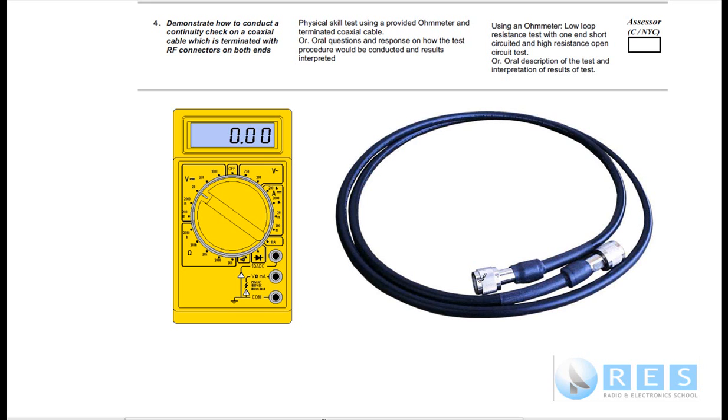The next test is to check that there's actually continuity between the shield at this end and the shield at that end, and also continuity between the pin at this end and the pin at that end. To do that we use a low ohm scale because we're expecting to find a very low resistance. First when we measured between the center conductor and outer conductor, we did a high ohm scale and expected to find infinite resistance because they shouldn't be touching.